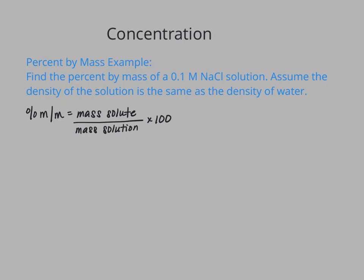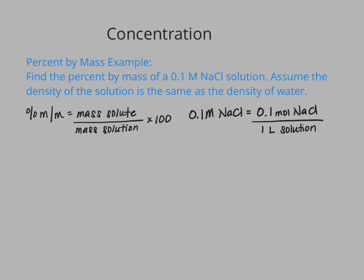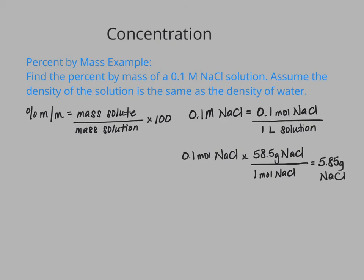They actually didn't give us any of that information outright, so we have to derive it from what they did give us. The only numerical value they gave us was 0.1 molar NaCl. Whenever we see molarity, we know it's moles over one liter, so we can take that molarity and split it apart: 0.1 molar NaCl equals 0.1 moles of NaCl over one liter of solution. Now that I have my moles of solute, I can use the molar mass of NaCl to convert to grams. So 0.1 moles of sodium chloride multiplied by the molar mass gives me 5.85 grams of sodium chloride.